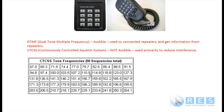We put a CTCSS tone on a radio repeater's receiver so that it's not enough just to transmit to the repeater on its frequency — you must also switch on in your transmitter a CTCSS tone of the appropriate frequency for that repeater. You'll have to look up a list and find out if that repeater has tone guard on it, what the CTCSS tone frequency is. If you try to transmit into that repeater without a tone, it's as if the repeater is not there.